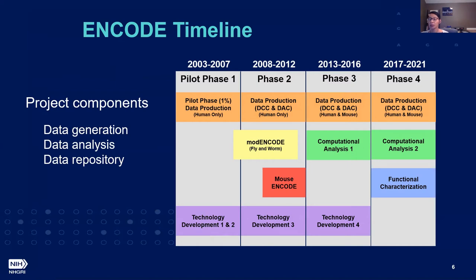Examples of technology development can be seen for chromatin accessibility, which went from DNase-seq to FAIRE-seq, and now we're seeing a lot of ATAC-seq. We're also seeing changes in chromatin IP technologies.